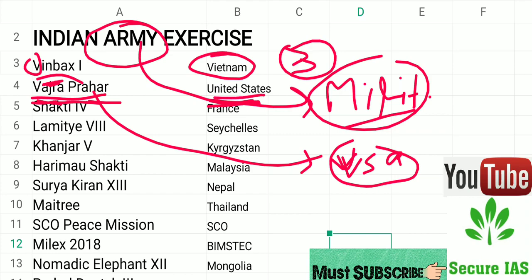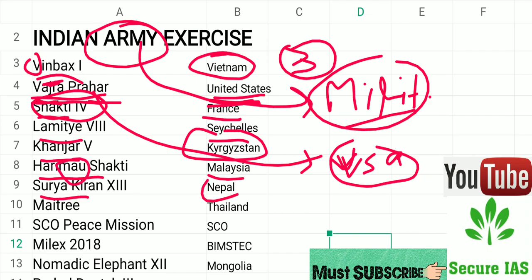Sakthi is connected with France. Lamithi is connected with Seychelles. Khanzar is connected with Kyrgyzstan. Harimau Shakti is connected with Malaysia. Suri Jagera is connected with Nepal. Maitri is connected with Thailand. SCO Peace Mission is with the SCO. Mileks is with Wimstack country. Nomadic Elephant is connected with Mongolia.